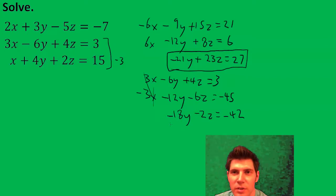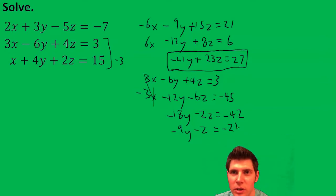And notice these all can be divided by two. So it simplifies to negative 9y minus z equals negative 21. I'm going to use this equation.